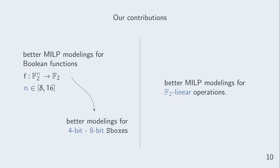In this work, we first provide better ways of modeling boolean functions of size 8 to 16, which gave us better modelings for S-boxes of any size. We then studied how to model F2 linear operations and consequently linear layers.